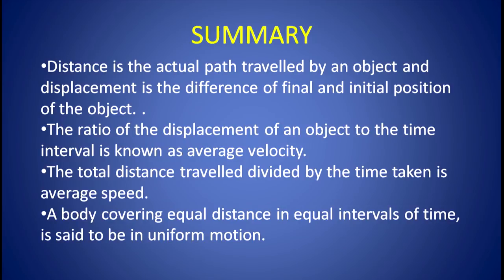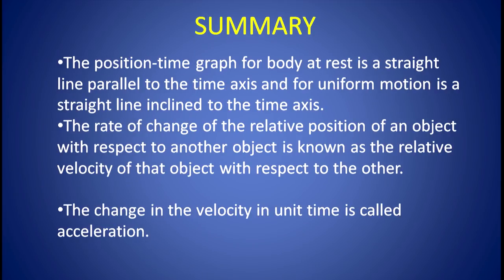Let us summarize what we have studied today. Distance is the actual path travelled by an object, and displacement is the difference of final and initial position of the object. The ratio of displacement to the time interval is known as average velocity. The total distance travelled divided by the total time taken is the average speed. A body covering equal distance in equal interval of time is said to be in uniform motion. The position-time graph for a body at rest is a straight line parallel to the time axis, and for uniform motion it is a straight line inclined to the time axis. The rate of change of the relative position of an object with respect to another is known as relative velocity. The change in velocity per unit time is called acceleration. Hope you have understood today's discussion. Thank you.